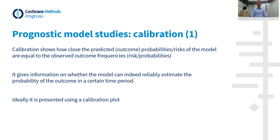Let us first look at calibration. Calibration reflects the agreement between the probability of the outcome as predicted by the model versus the true observed outcome probability or frequency in the dataset at hand. Calibration measures are important to report in a review of prognosis studies because they provide information about how correct the prediction model is — it tells us whether the prediction model overestimates or underestimates the true outcome risk. Calibration can be presented in several ways; the most common are the observed versus expected ratio (the OE ratio) and the calibration plot together with the calibration slope.